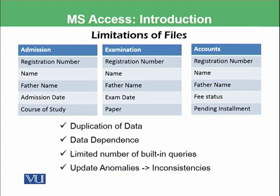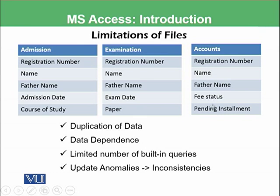To summarize the limitations of files: in the admission department we store registration number, name, father name, admission date, and course of study. In the examination department we store registration number, name, father name, exam date, and paper. In accounts, again the first three fields are the same — registration number, name, father name — plus fee status and pending installments. In such a scenario, we have duplication of data, where one student is stored at all three points.